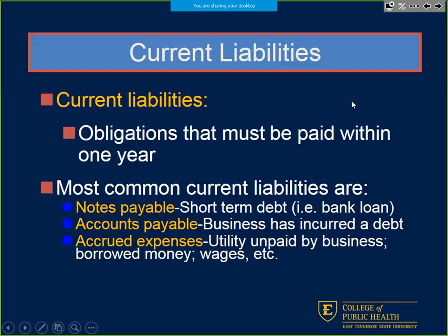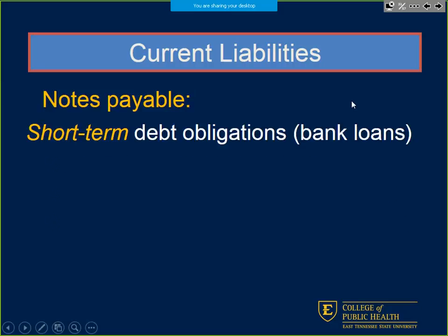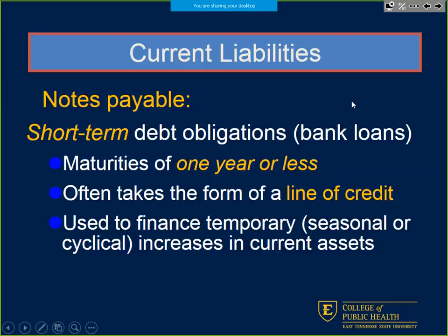Our monthly wage payout is an accrued expense for ETSU. Notes payable — short-term debt obligations, a year or less — come in the form of lines of credit, like a credit card. Maybe you have one for gas and one for emergencies. The credit card company gives you a line of credit and your obligation is to pay the bill. Businesses often make minimum payments, but the interest will accrue if they do.